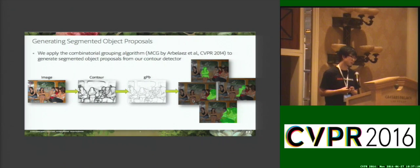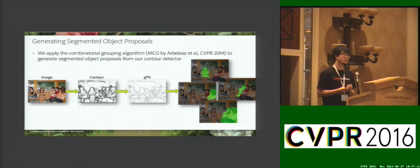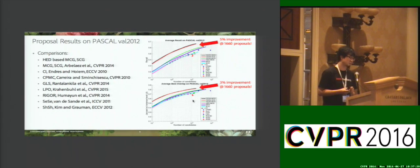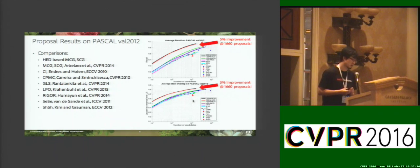To further verify whether the learned contour can be used for high-level recognition tasks, we replace the edge detector in the MCG algorithm with our contour detector to generate object proposals. As shown in these two figures, our algorithm, the red and black curves, significantly improved the baseline's average recall rate and average best overlap rate, with less than 2000 proposals.